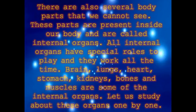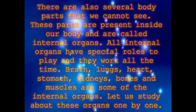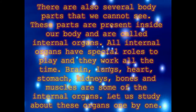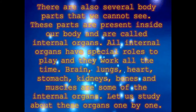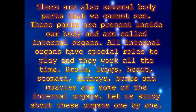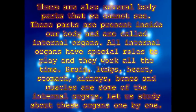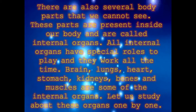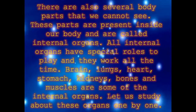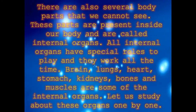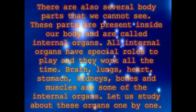There are some parts of the body that we cannot see. These parts are present inside our body and are called internal organs. Parts which are inside us — like our brain, heart, lungs, and kidneys — are called internal organs. They cannot be seen. When I look at Hrithika or Veer, I cannot see their heart or lungs because they are internal organs.